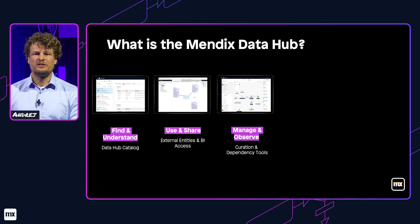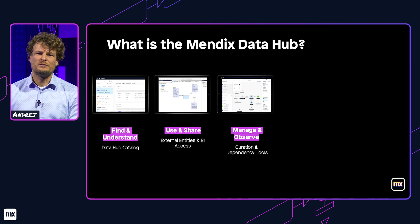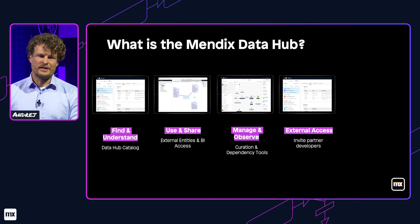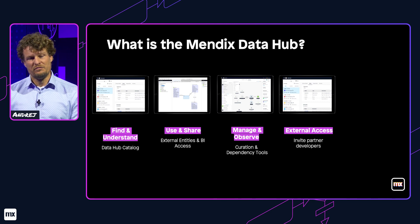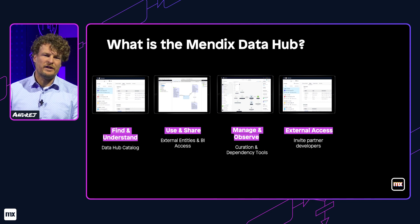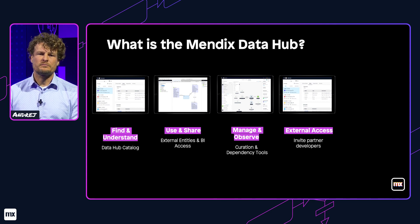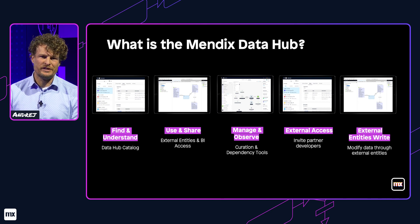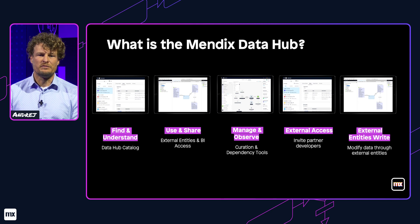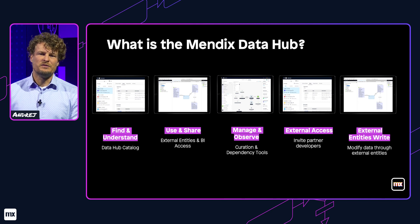At this Mendix World, we're introducing additional new features. Two of them I want to call out because they're also useful for MS MLin and are based on feedback from this customer. The first is external access, which gives a company the ability to invite external users into their catalog — for example, MS MLin can now invite First Consulting into their catalog so they can build applications using it. The second is external entity write, which gives you the ability to get data through external entities into your app, make changes, and write them back to the original service.